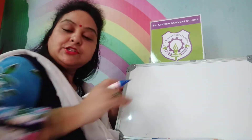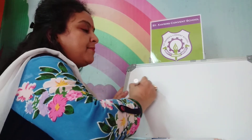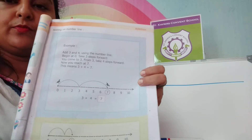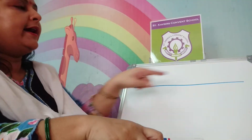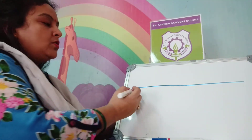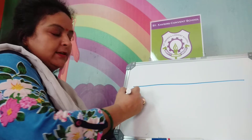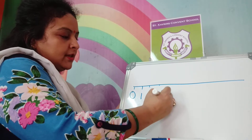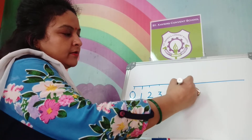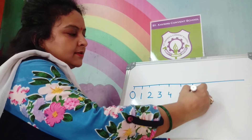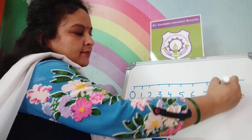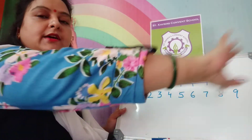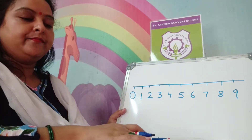Now come to page number 39. There is a number line drawn on your book. A number line is a line aligned with numbers. Numbers start from 0, 1, 2, 3, 4, 5, 6, 7, 8, 9 and so on. You can draw further more numbers on the number line.